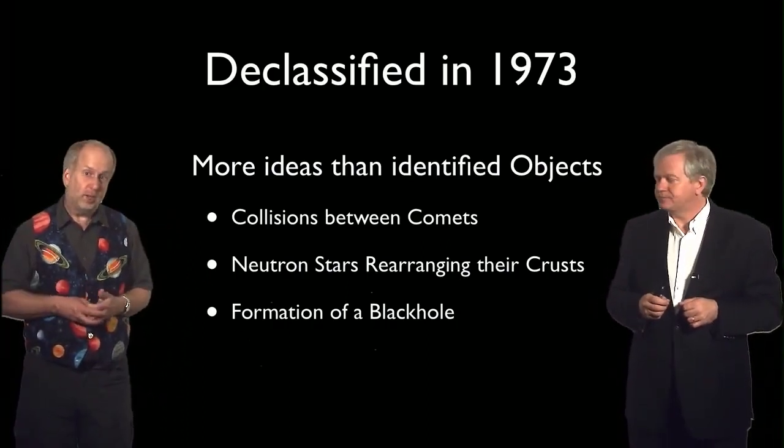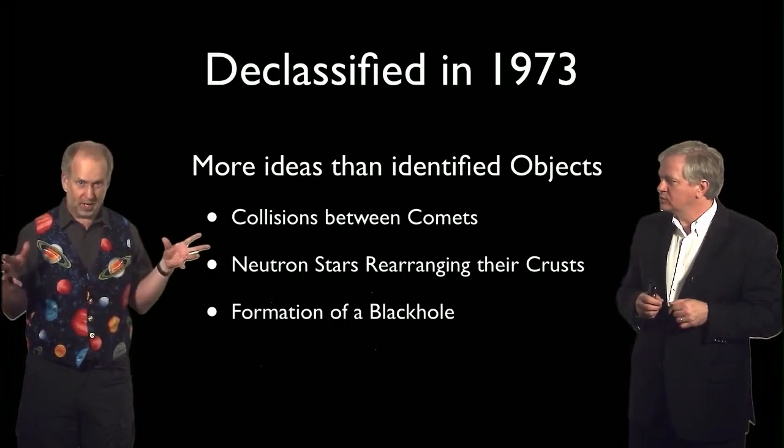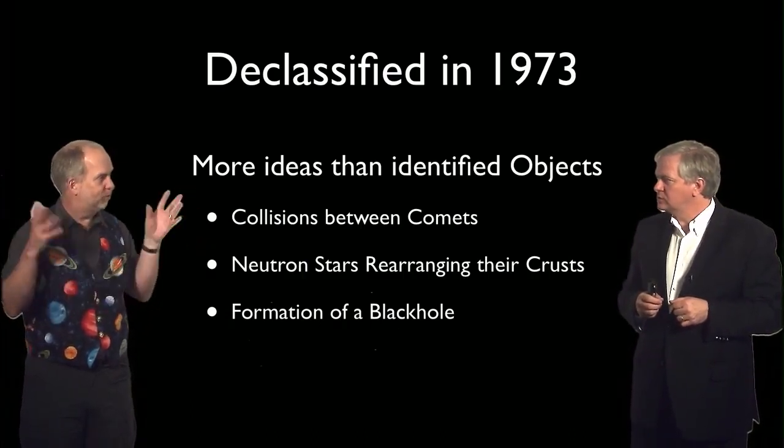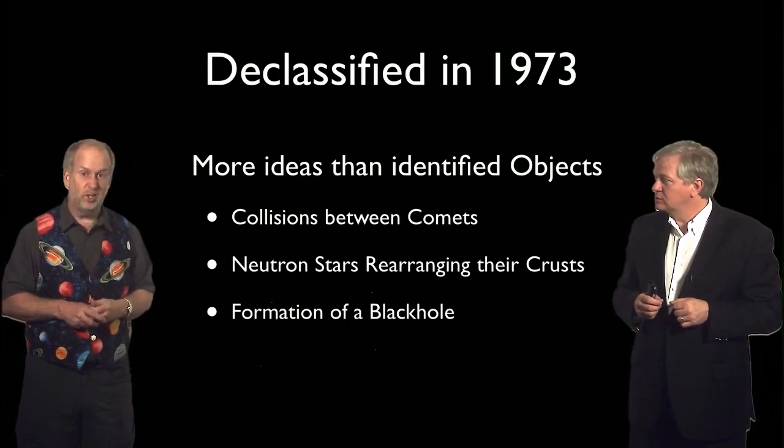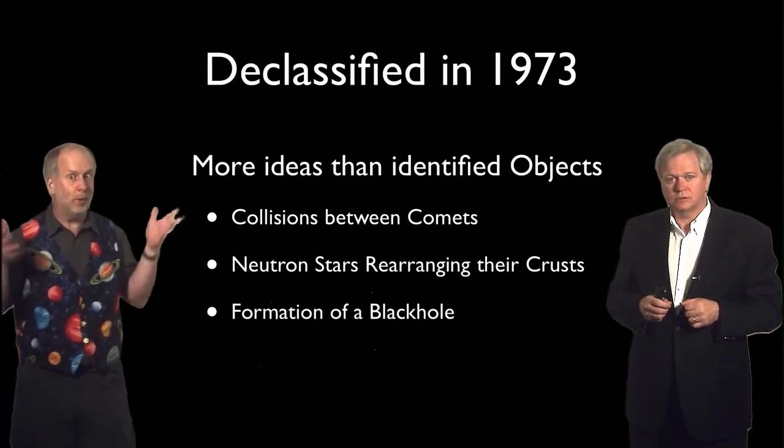Another possibility is we're looking at the formation of a black hole. We know that a big star dies, runs out of fuel, everything falls down, produces a black hole, and there's plenty of energy there, and maybe some of it comes out as gamma rays, somehow.